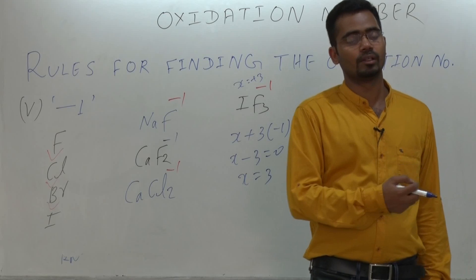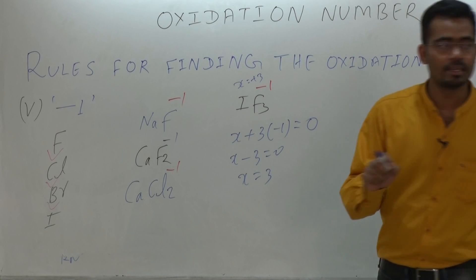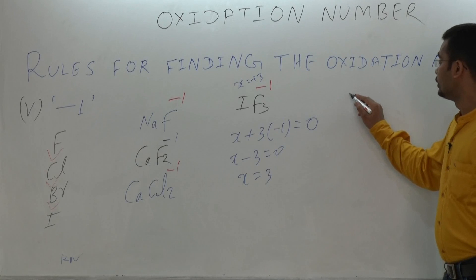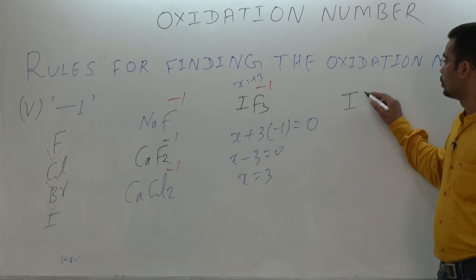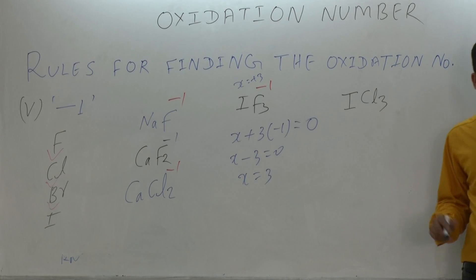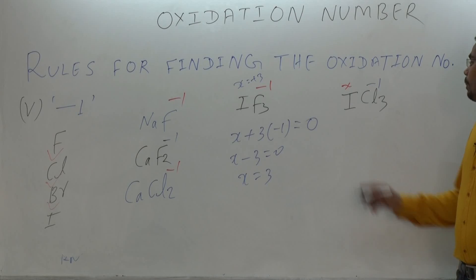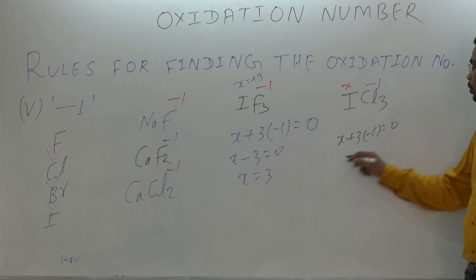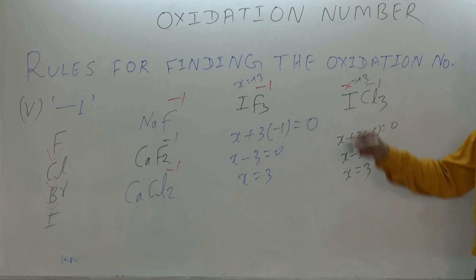Another example: ICl3. In chlorine and iodine, chlorine is more electronegative, so chlorine has minus one. Iodine has oxidation state x. The net charge must be zero: x + 3(−1) = 0, so x = +3. Therefore, iodine has a plus three oxidation state in ICl3.